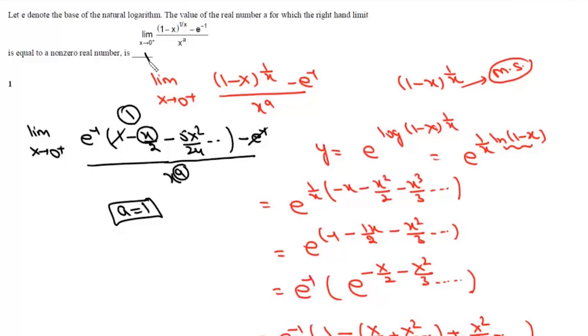So the value of real number a is 1, and with a equal to 1, the answer to this limit is minus 1 upon 2e.